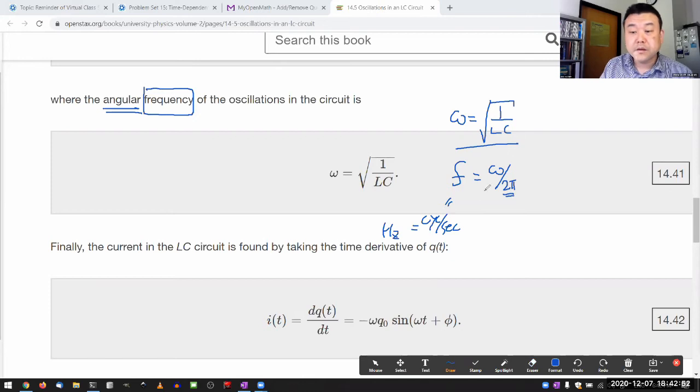It's converting from ω, which is in radians per second, and converting the radian into cycle, so that it's cycles per second.